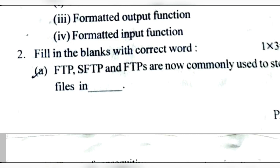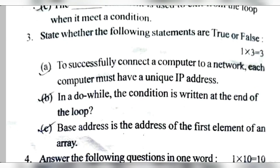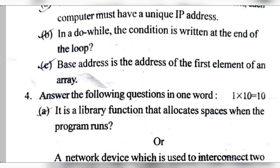Number 2, Fill in the blanks: FTP, SFTP, FTPS are commonly used protocols to store files in a cloud. Number B — A set of consecutive memory locations is called an Array. Number C — The break statement is used to exit from the loop when it meets a condition. True and False: A computer must have a unique IP address to connect to a network — True. In a do-while loop, the condition is written at the end — True. The base address is the first element of an array — True.